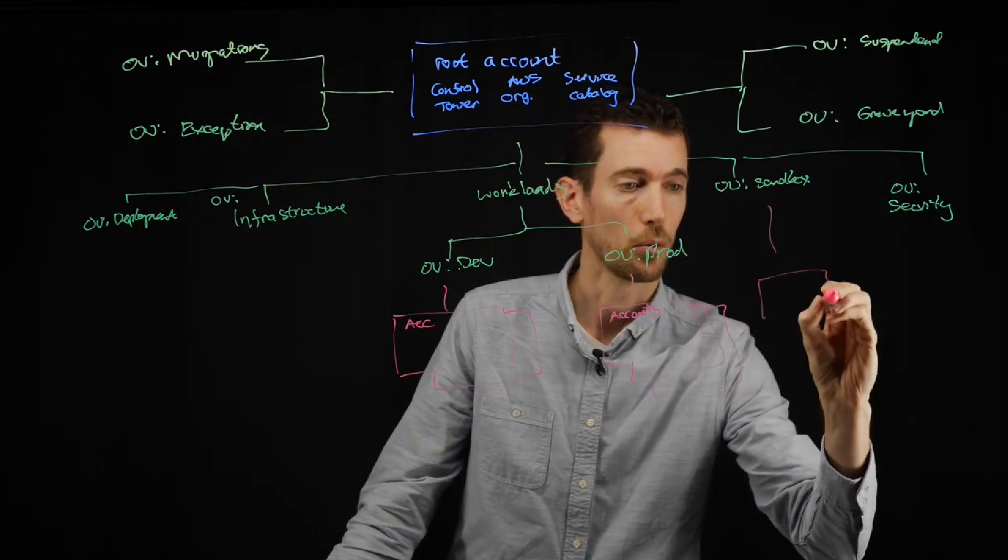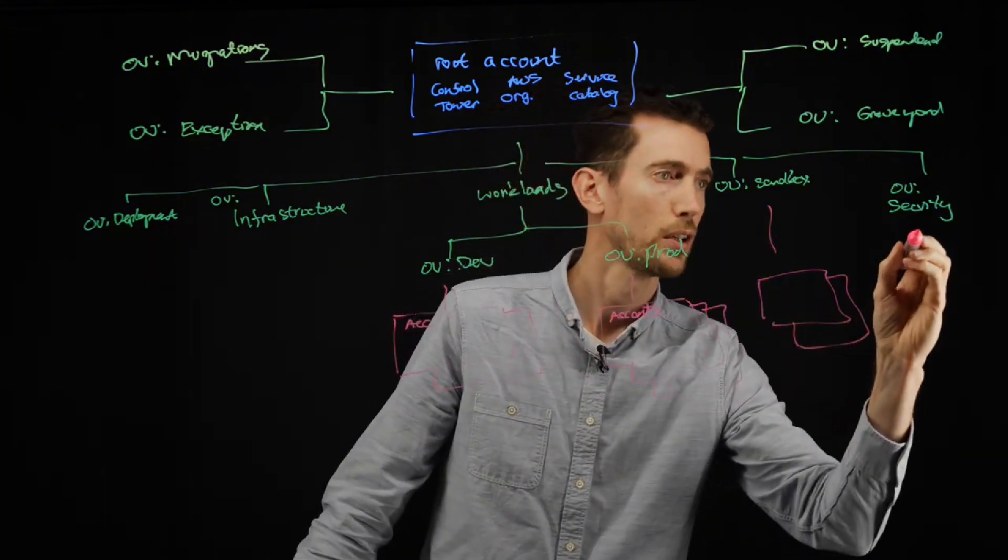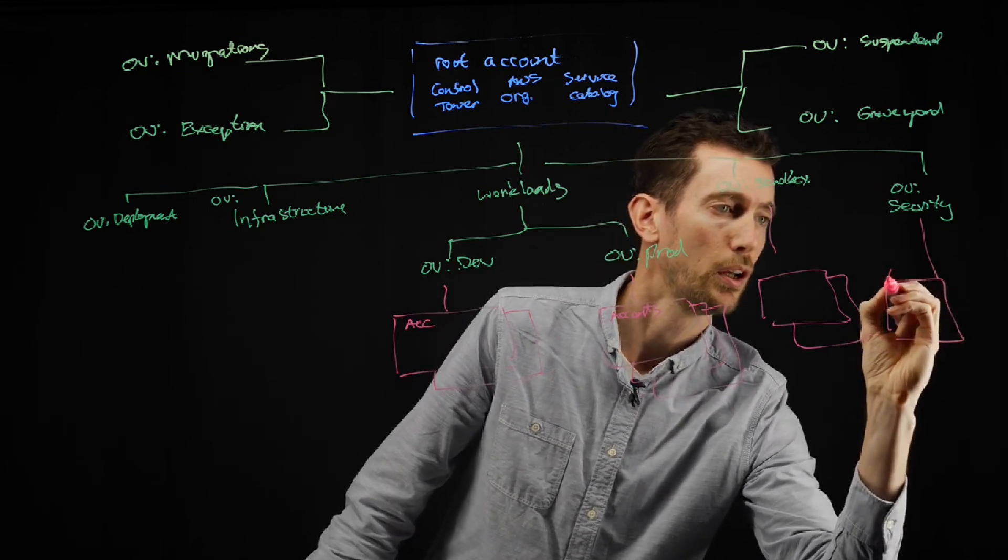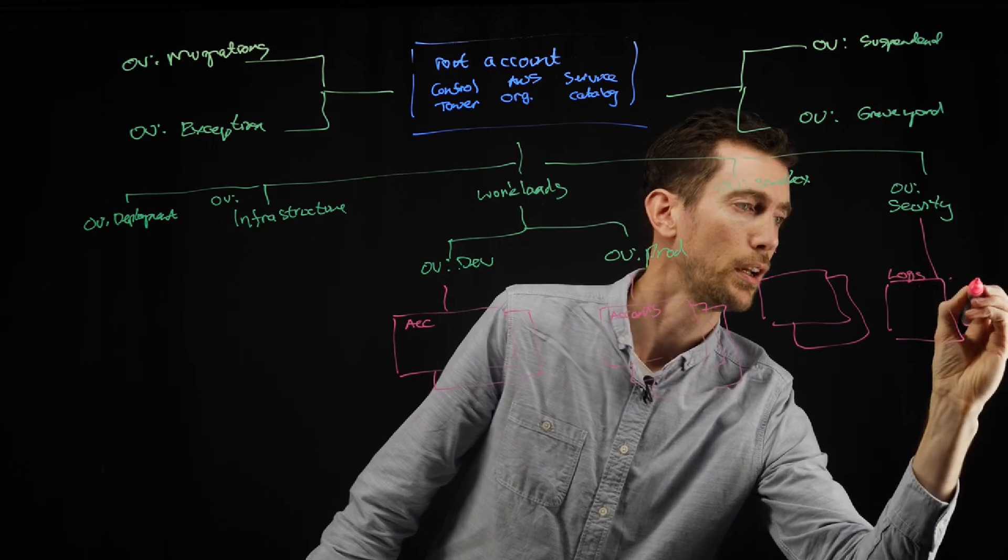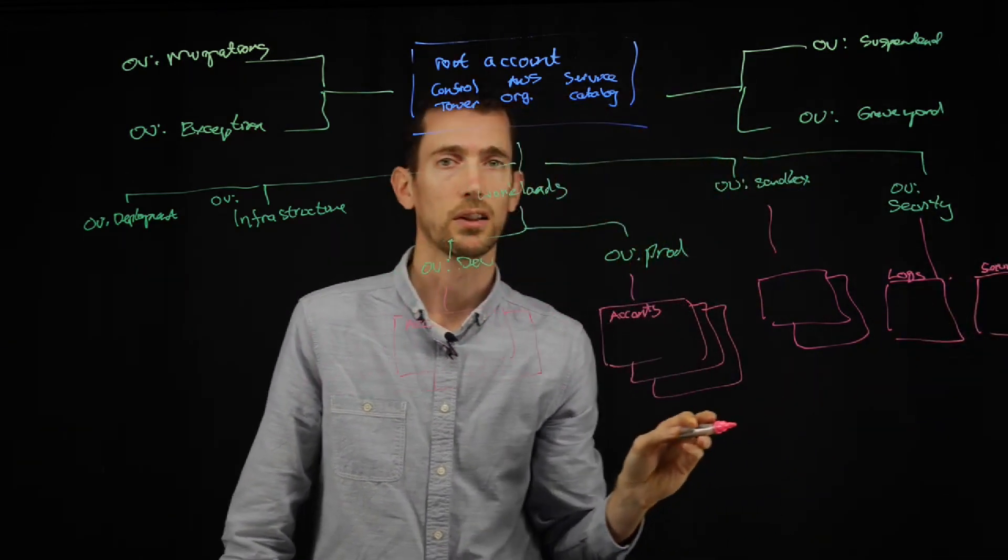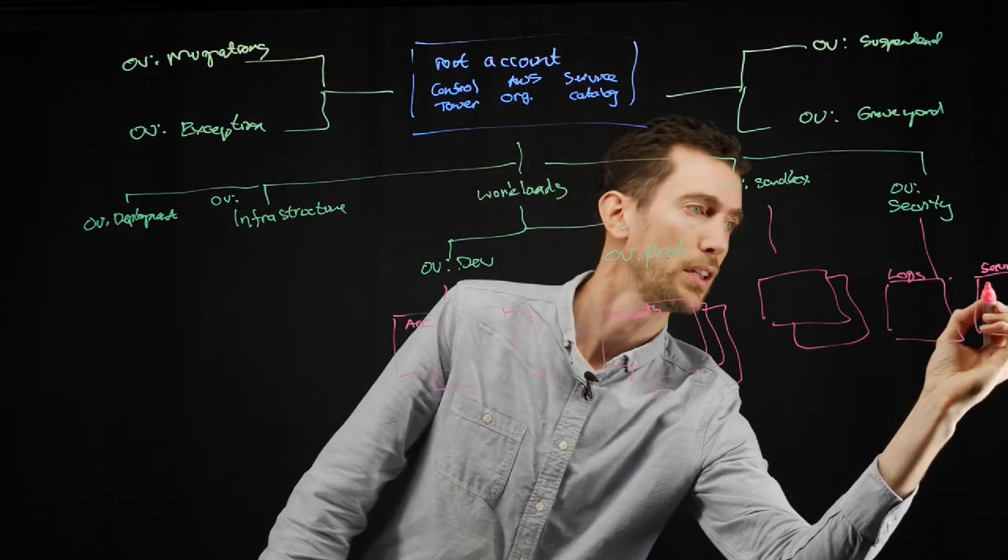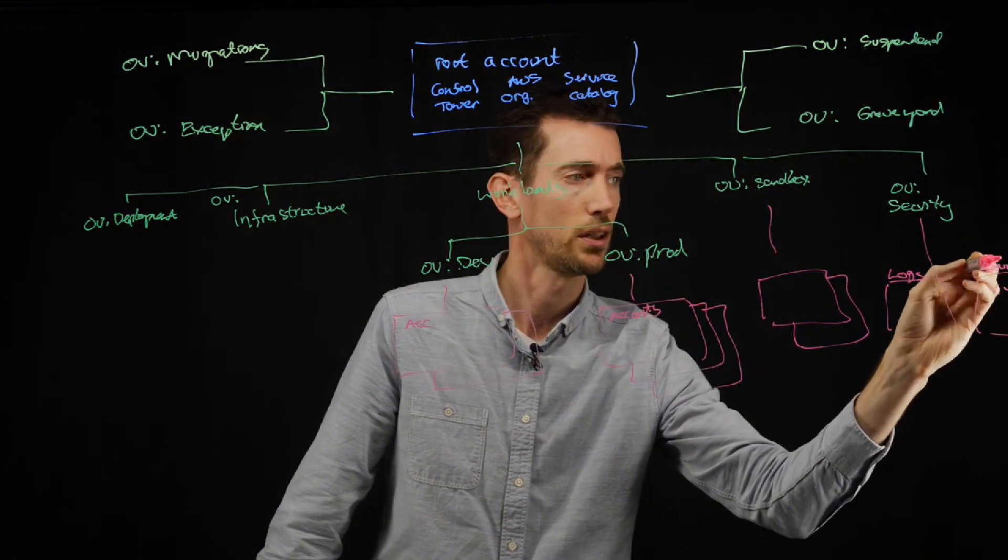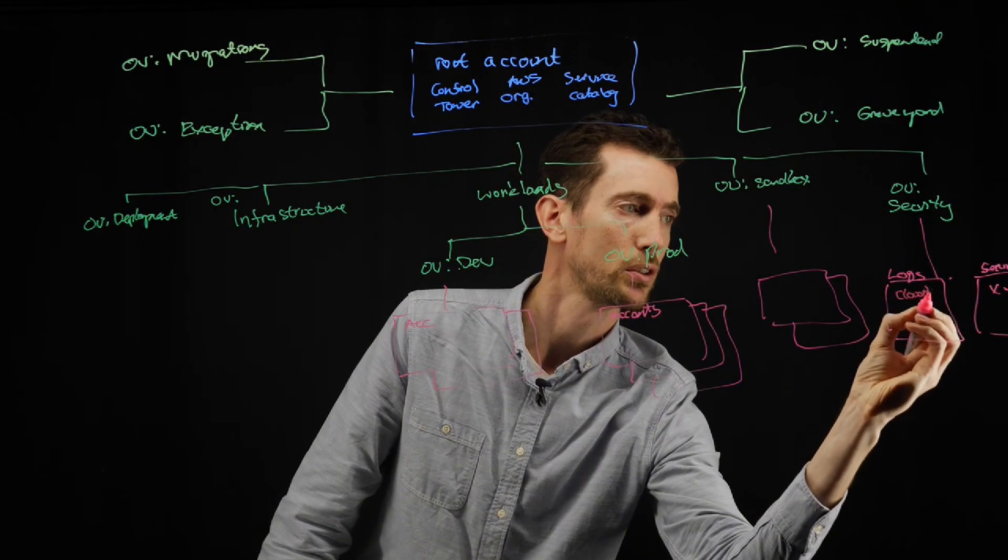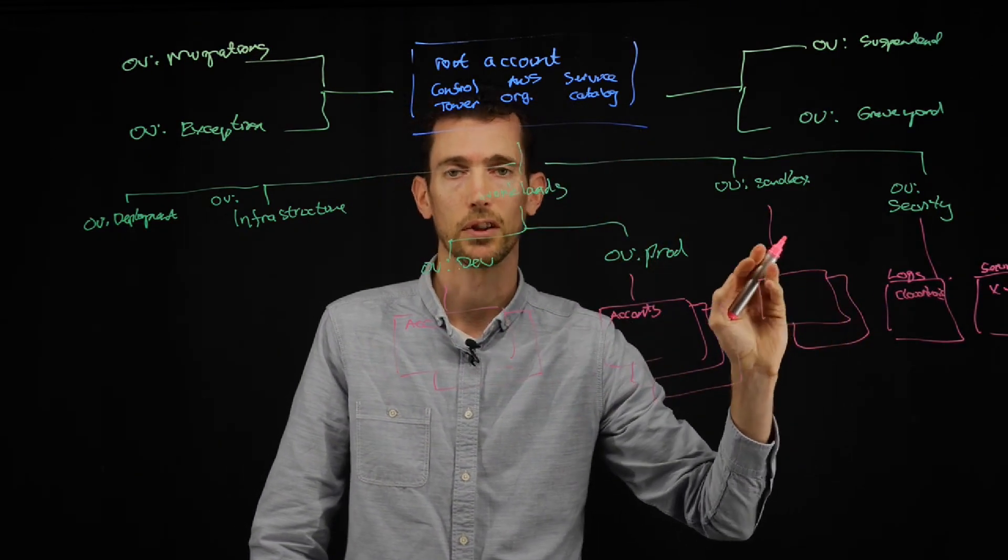You'd also have a number of accounts over here in your sandbox. And like I said, they'd be short-lived. Over here, you would have one for your logs. And then another one for your other security tools. So that would be things like AWS Security Center, GuardDuty, Security Hub. All of those would be secured over here in this security account. Here you would have your cloud trail logs.